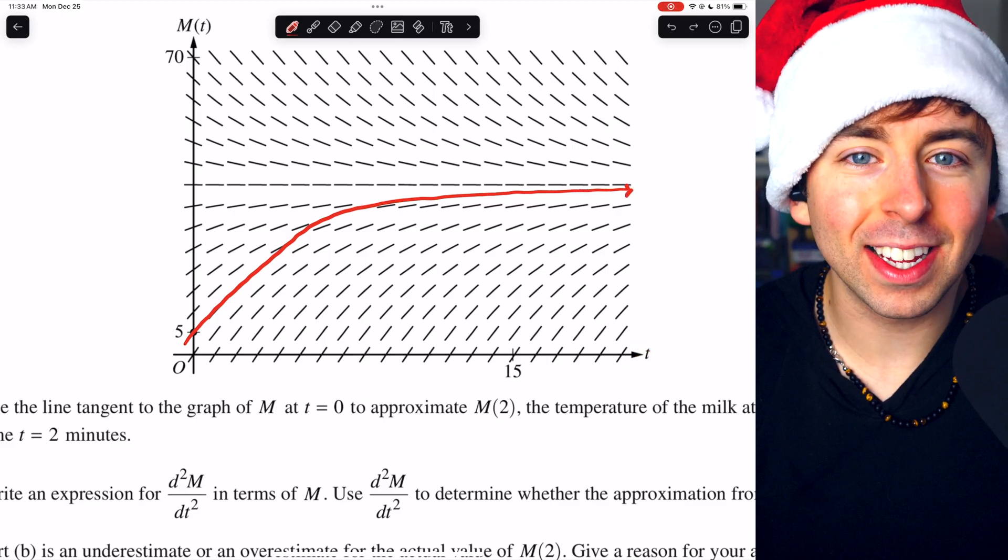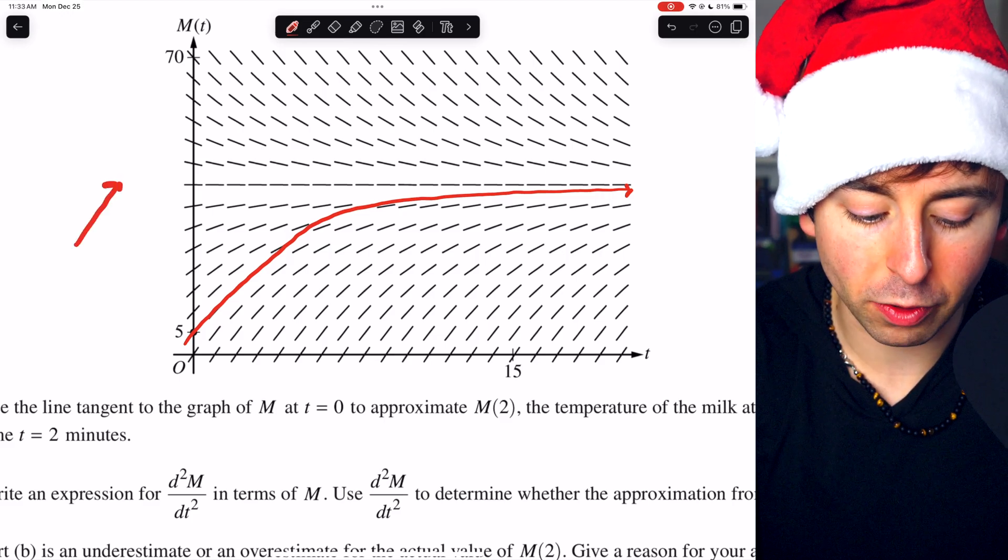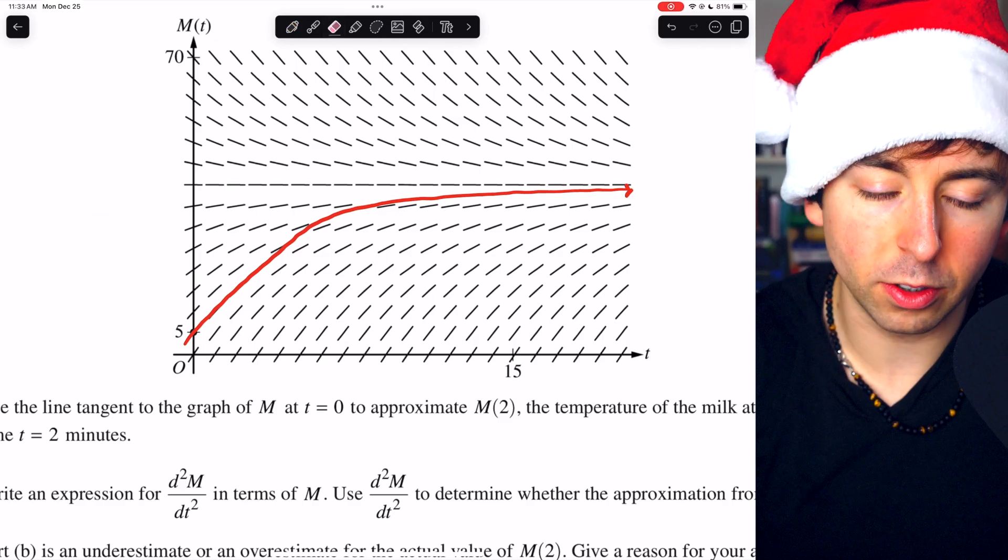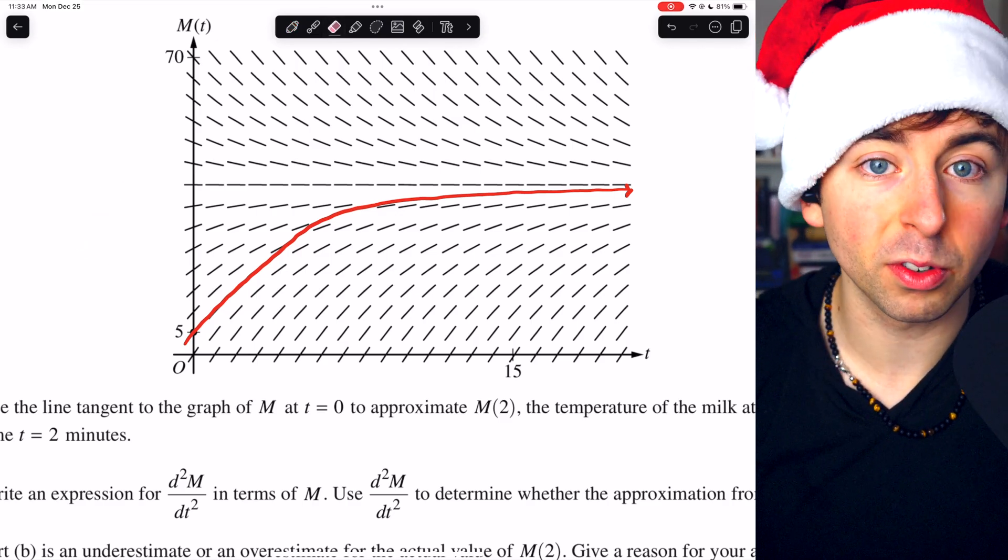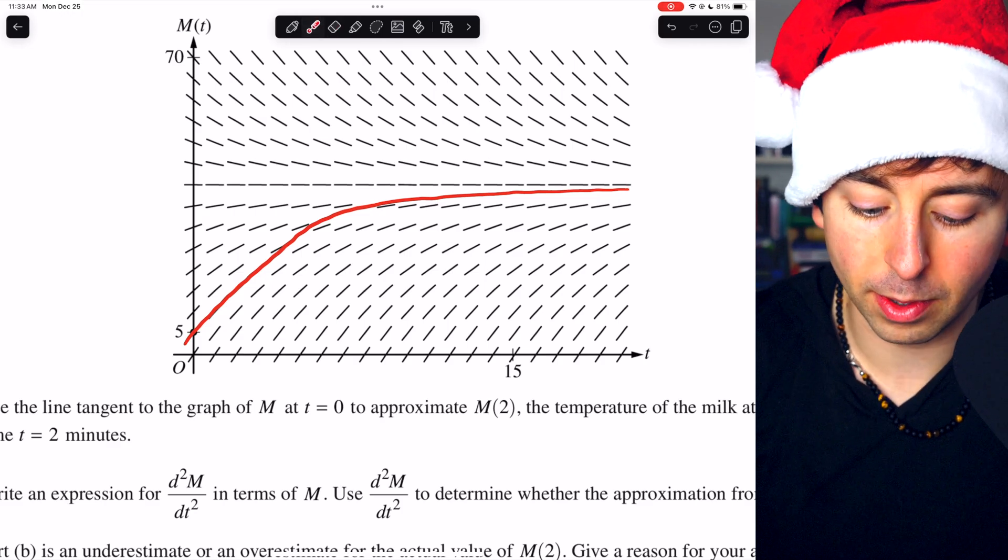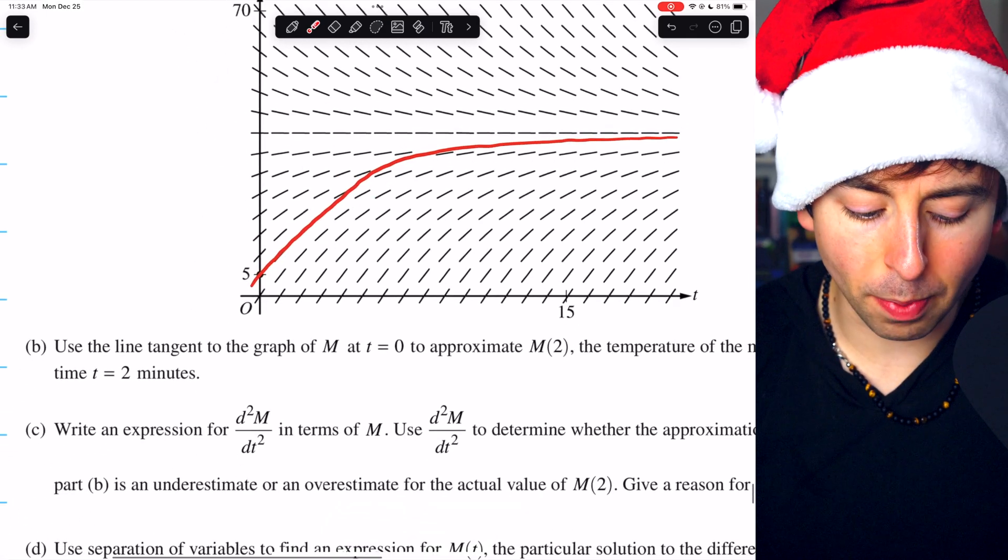Your teacher might have often told you to make sure to put arrowheads at the ends. So it's perhaps interesting to note that according to the College Board's official scoring guidelines, you do not need arrows on this graph. Let's move on to part B.